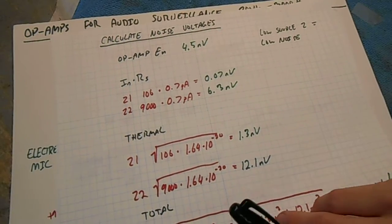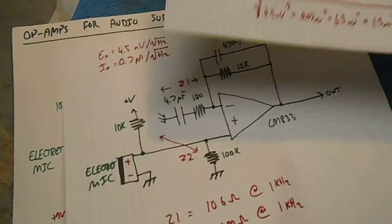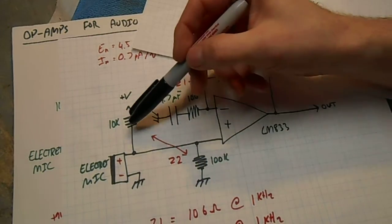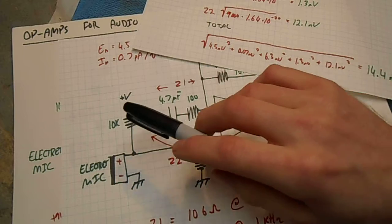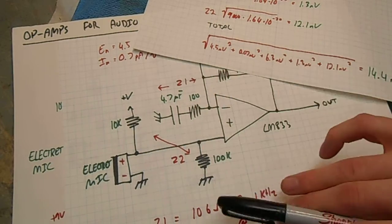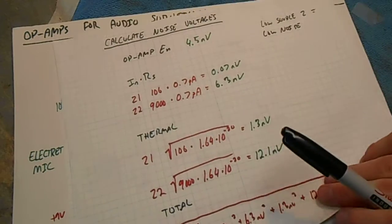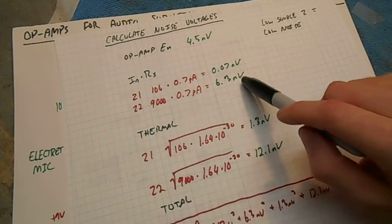As you can see, the main source of noise is our Z2, which is essentially our source impedance. We need to lower our source impedance value to get the lower noise. Consequently, that also lowers the I sub N times R sub S noise as well.